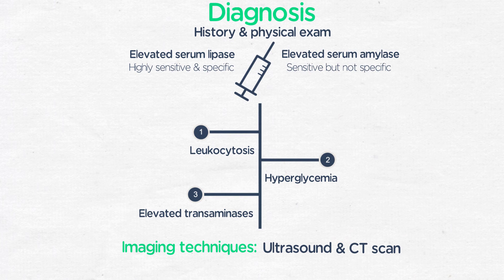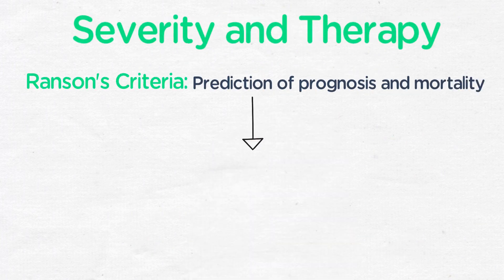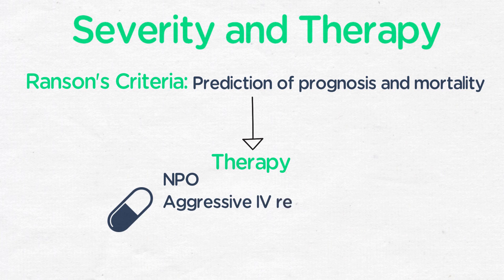The exact criteria is beyond the scope of this lecture, but Ranson criteria are a set of factors used for prognosis in acute pancreatitis. Treatment, in addition to management of the underlying cause when appropriate, is largely supportive care — particularly hemodynamic support with aggressive intravenous volume repletion, as well as pain control, often with opioids, though morphine is considered relatively contraindicated due to sphincter of Oddi spasm.